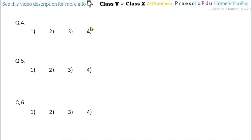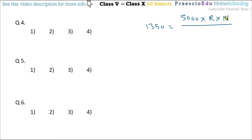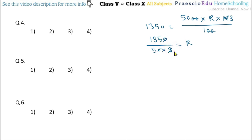Question number 4: what will be the rate of interest if ₹5000 fetches ₹1350 as simple interest after 3 years? So 1350 = 5000 × R × 3 / 100. The two zeros cancel, giving 1350 / (50 × 3) = R. Simplifying: 1350 / 150 = 9. So R equals 9% per annum — option number 3.